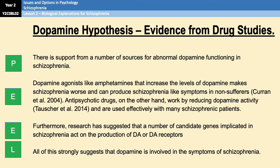Research support for the dopamine hypothesis includes the fact that dopamine agonists like amphetamines — which increase dopamine levels in the brain — make schizophrenia worse and can produce schizophrenia-like symptoms in non-sufferers. Also, antipsychotic drugs given to people with schizophrenia, which work by reducing dopamine activity in the brain, help to reduce symptoms. Furthermore, research has suggested that candidate genes implicated in schizophrenia actively act on the production of dopamine or on dopamine receptors, strongly suggesting that dopamine is involved in the symptoms of schizophrenia.